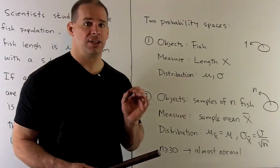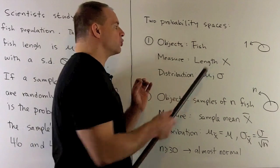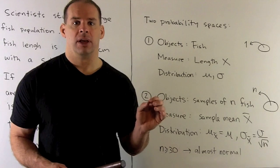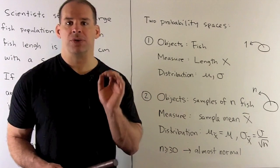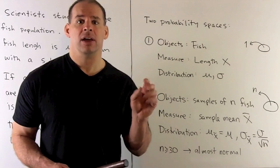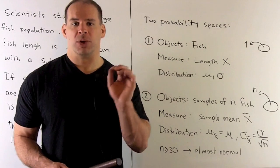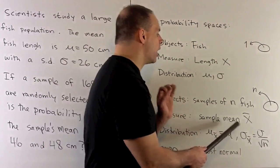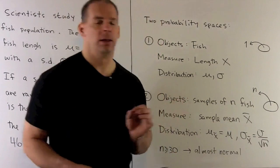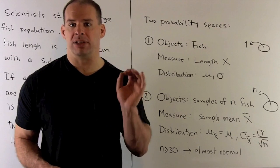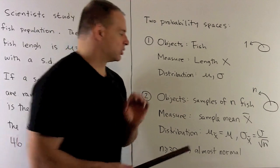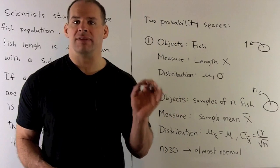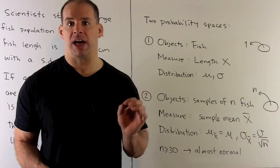In our second case, instead of drawing a single fish randomly, we're going to randomly select a sample of n fish. We want to attach a measurement to that. The natural thing to do is, each fish is going to come with a length, so for the sample, we're just going to attach the average of the length. That's the mean of our sample, we'll call that x bar. To x bar, there's also a probability distribution. The new mean is just the old mean. The new standard deviation is equal to the old standard deviation divided by the square root of the sample size.